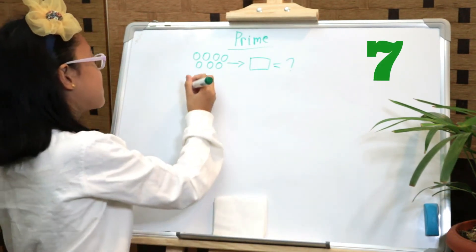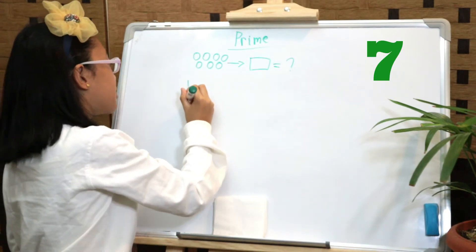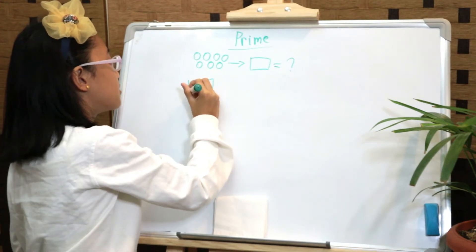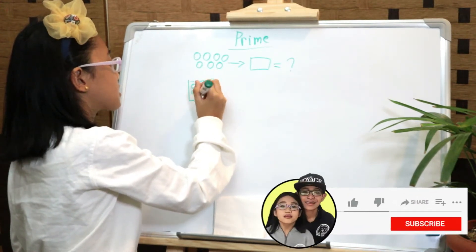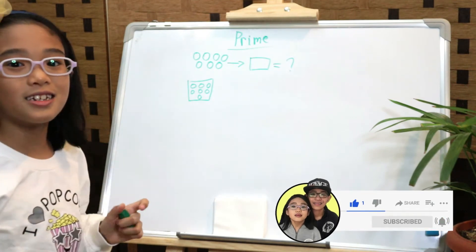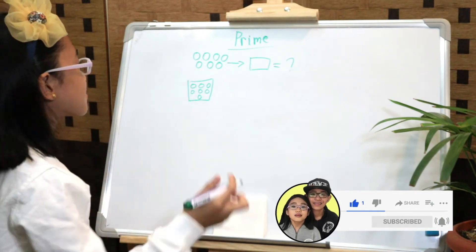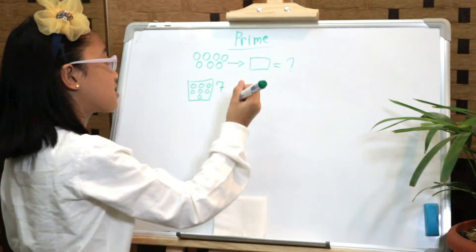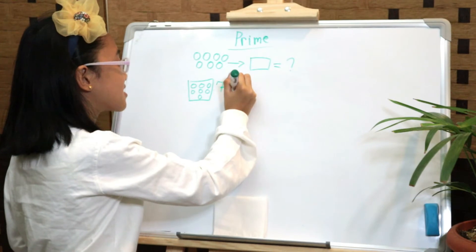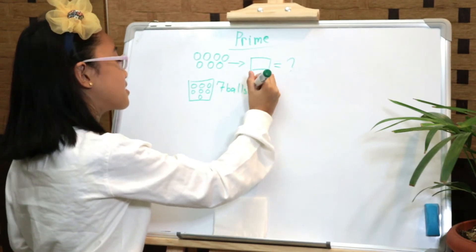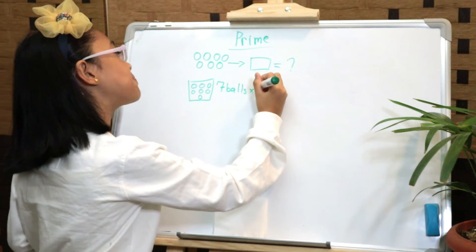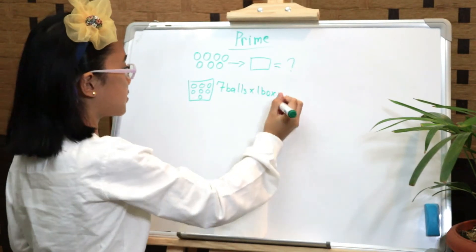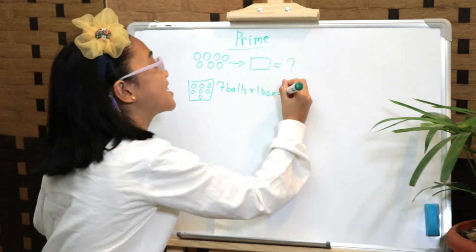Let's try seven. One box — one, two, three, four, five, six, seven. We only need one box. So seven balls times one box equals — you guessed it — seven!